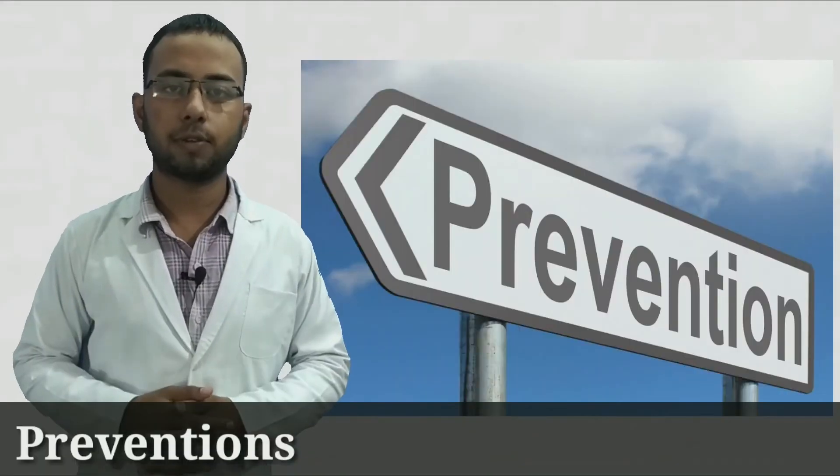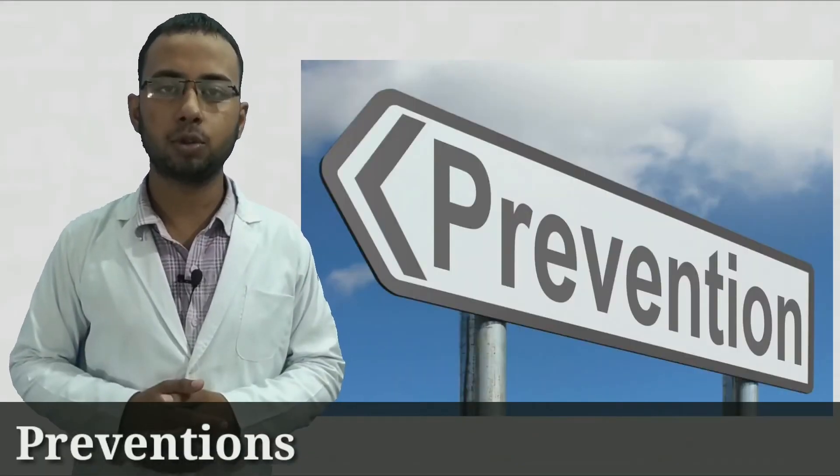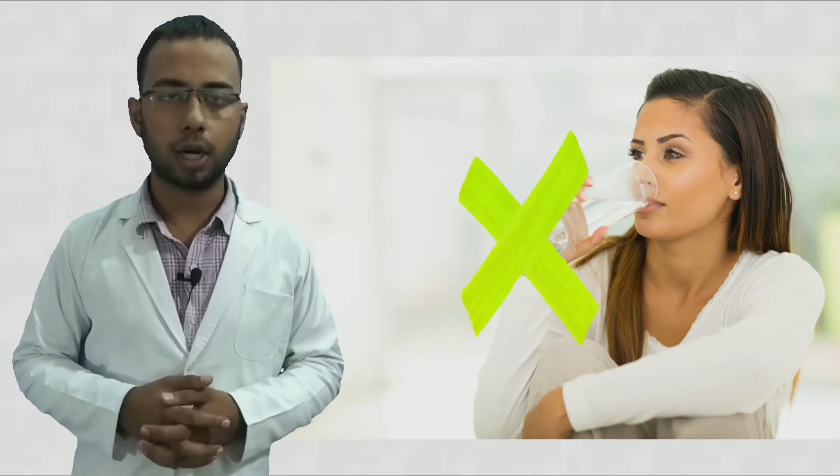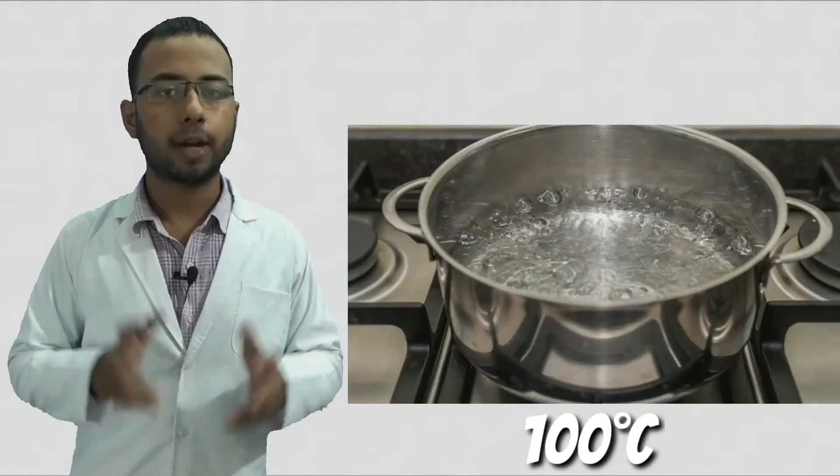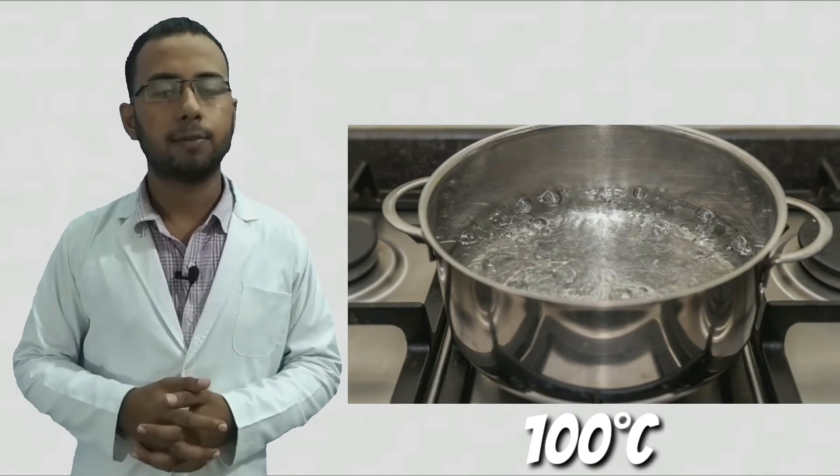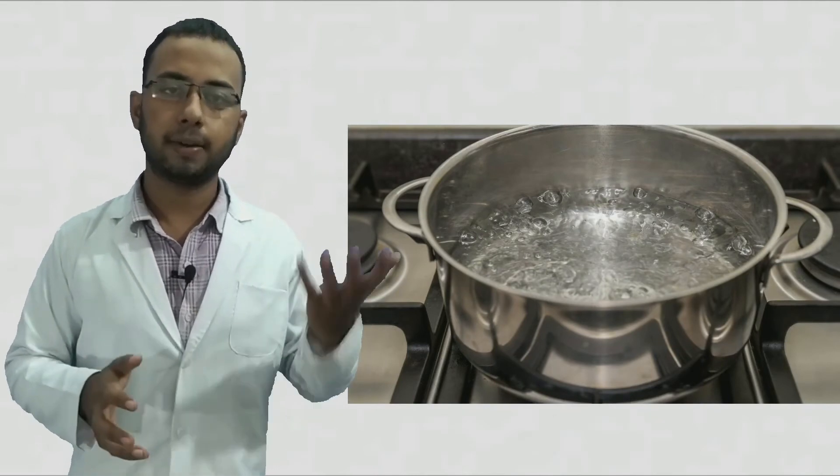Now the prevention of typhoid. First thing you have to do is drink RO-purified water, properly purified pure water, so that these types of cases will not occur with you. If RO is not available, you have to boil the water up to its boiling point for at least one minute, and after that drink, so that this bacteria will be killed and you have safe water to drink.